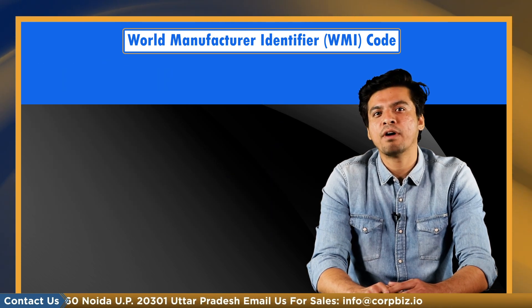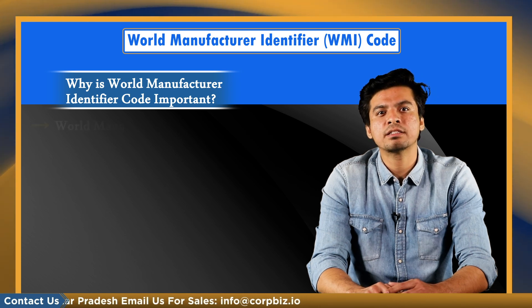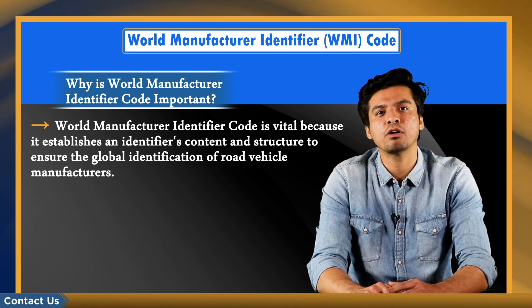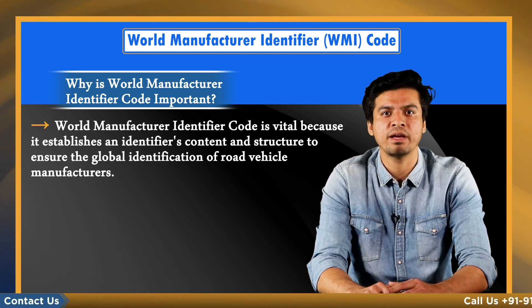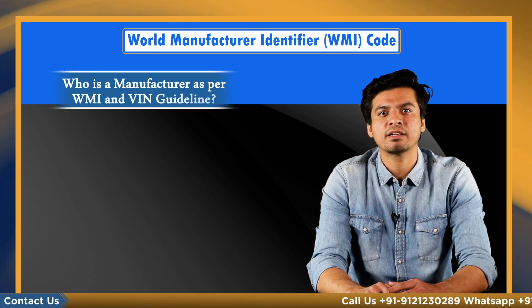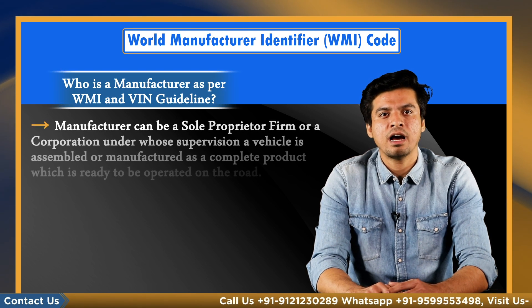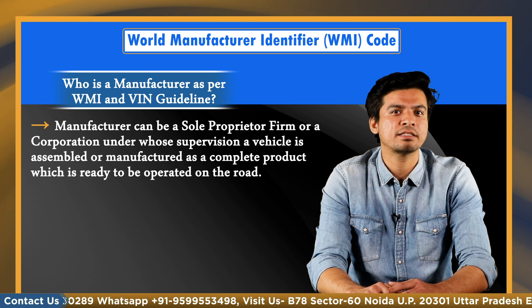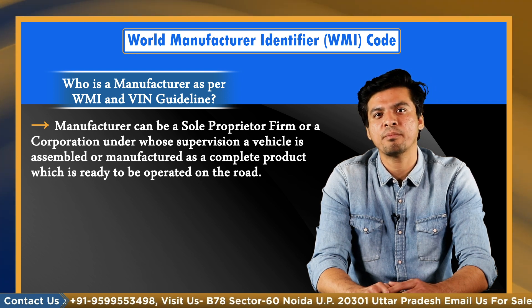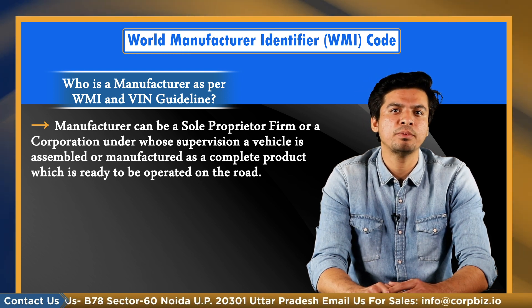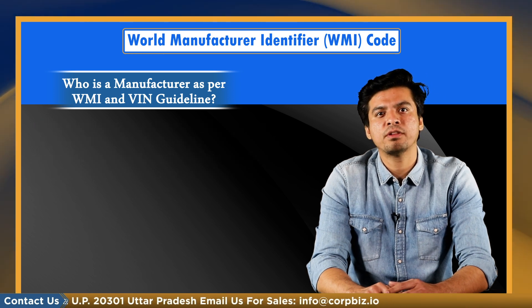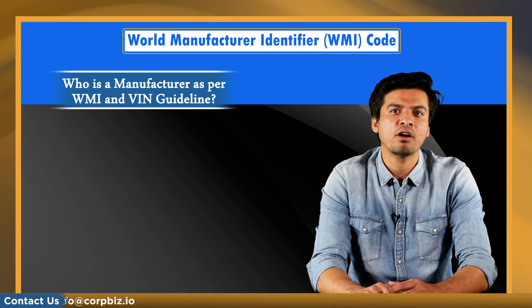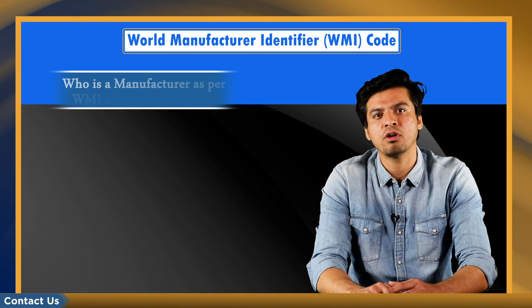Why is WMI code important? This code is vital because it establishes and identifies content and structure to ensure the global identification of road vehicle manufacturers. Who is a manufacturer as per the WMI and VIN guidelines? A manufacturer can be a sole proprietor, firm, or corporation under whose supervision a vehicle is assembled or manufactured as a complete product ready to be operated on the road. It is the responsibility of the manufacturer to register and acquire the VIN serial number. The customer has no role or liability in it.